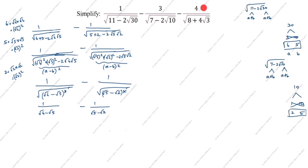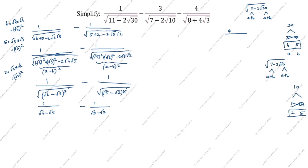Now we simplify the third term. Here 4 is given instead of 2 in the coefficient, so we cannot directly use the a plus b minus 2ab format. We take 4 divided by root of (8 plus 4 root 3) and factor out — taking 2 outside, what remains is root of (4 plus 2 root 3).